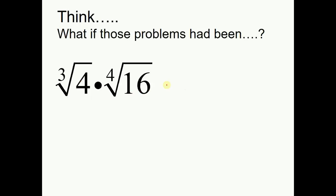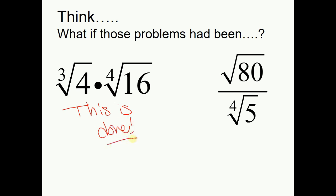Now, what if those problems have been like this? Cube root of 4 times the fourth root of 16. I could not do anything. This would be done. Can't do anything, can't deal with them, they can't be combined, any of that. Same thing over here. They don't have the same index, excuse me. If they don't have the same index, I can't combine them together.